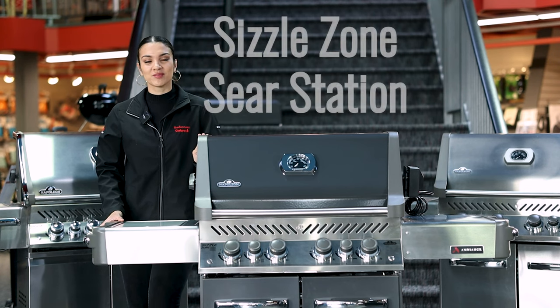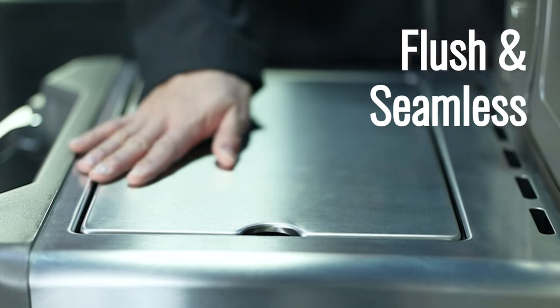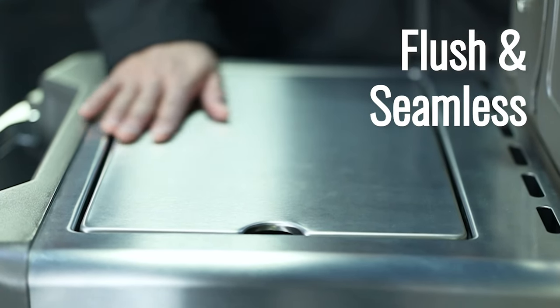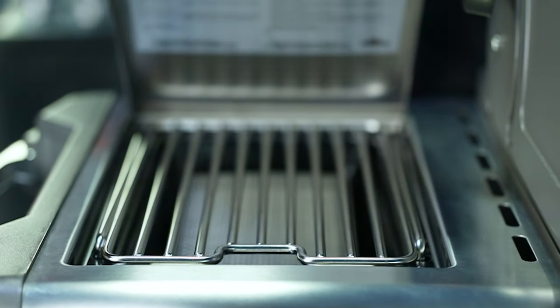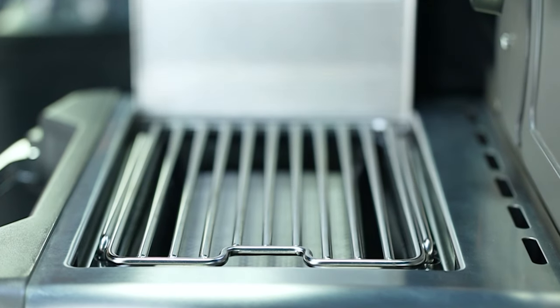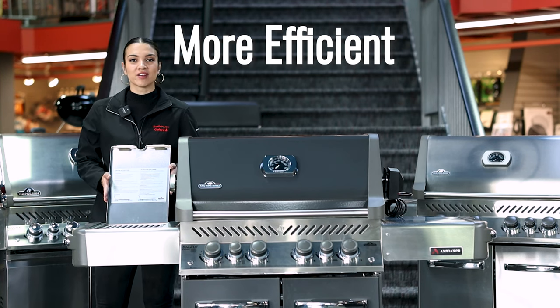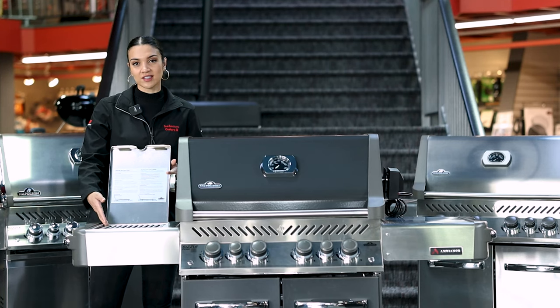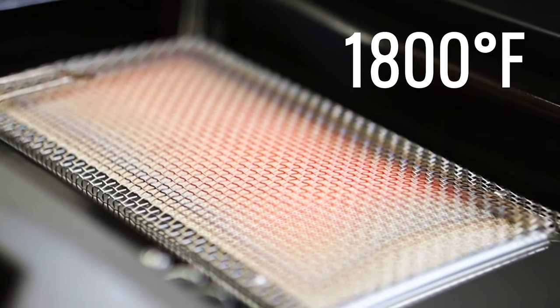On the left side of the ambiance, you have Napoleon's Sizzle Zone sear station. This sear station is hidden with a flush and seamless lid that makes the side shelf a regular shelf when the sear station is not in use. You can easily open it with a finger indent on the lid. Underneath, you'll find the ceramic infrared burner. A ceramic infrared burner is more efficient than a conventional burner. Basically, it's the porous brick that you find in your barbecue that pools with fuel where a spark ignition, in this case a jet fire ignition, lights it up and it becomes 1800 degrees Fahrenheit in no time.